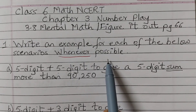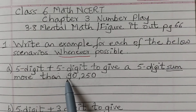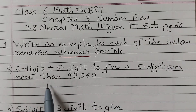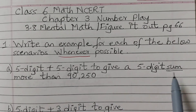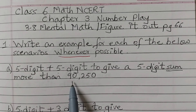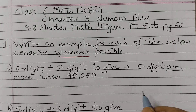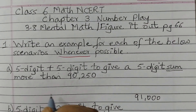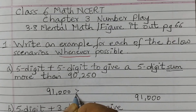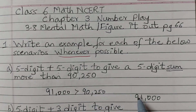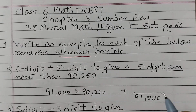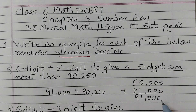We need to write one example for each of these scenarios. The first one is 5 digit plus 5 digit to give a 5 digit sum more than 90,250. That means we need to add two 5-digit numbers and the sum should be greater than 90,250. So let's say we get a sum of 91,000 — 91,000 is more than 90,250. So we want a sum of 91,000. Let's choose 50,000 plus 41,000, and we get the answer as 91,000.